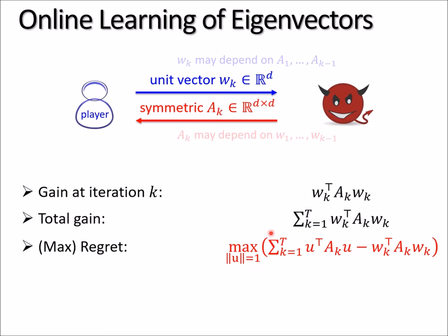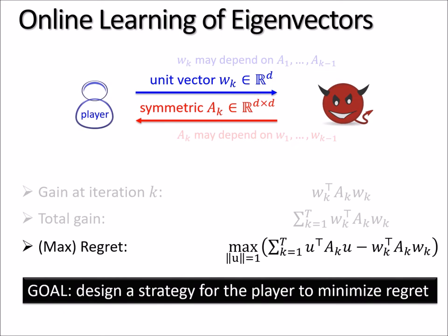The maximum regret is defined to be the difference between the total gain of the player and the gain of the best strategy, a unit vector u, after seeing all of the A_k's - the best strategy in hindsight. You compute this difference, known as total regret. The player's goal is to minimize regret. For simplicity, let me assume that all eigenvalues of A are between 0 and 1. This is the problem I want to study.